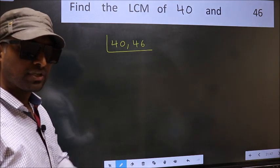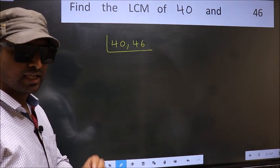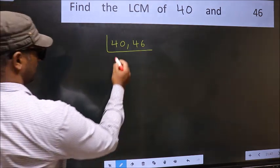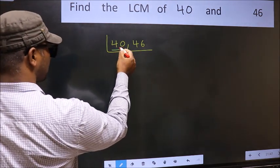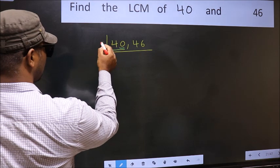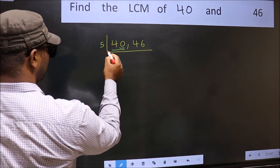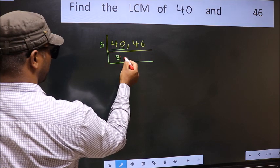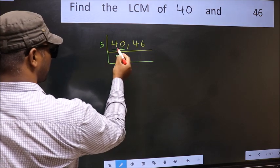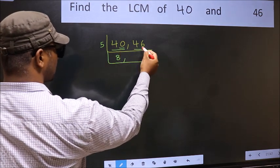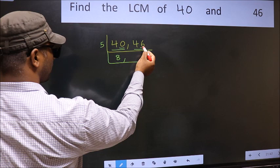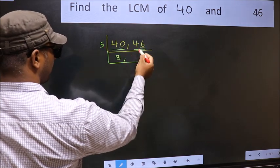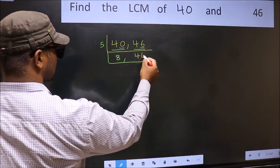Now focus on the first number, which is 40. The last digit is 0, so directly take 5. When do we get 40 in the 5 table? 5 times 8 is 40. The other number is 46 — last digit is neither 0 nor 5, so it is not divisible by 5. We write it down as it is.